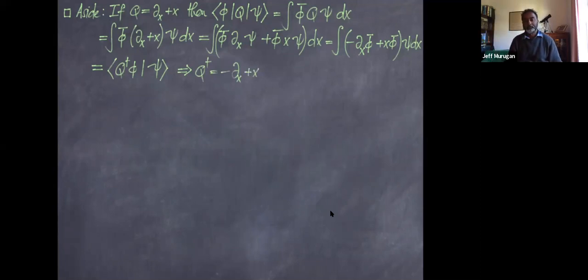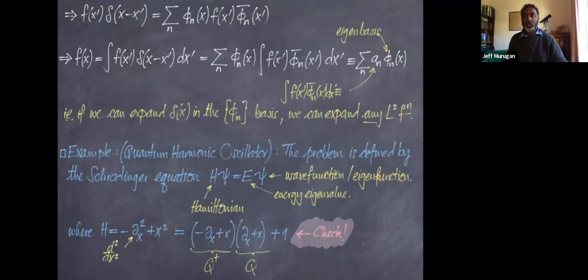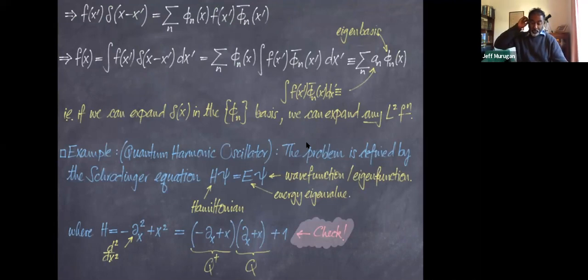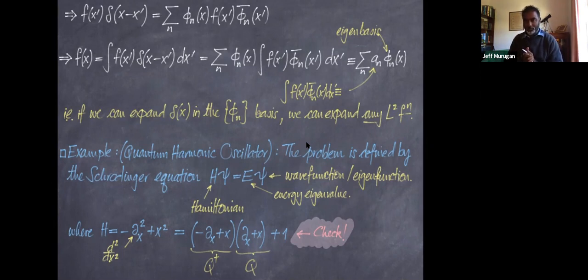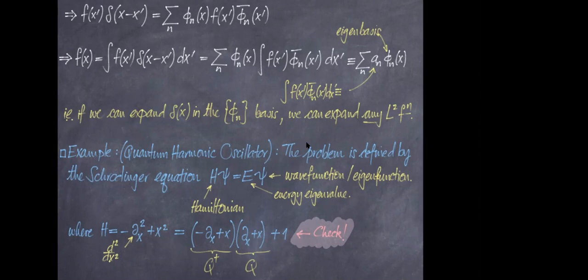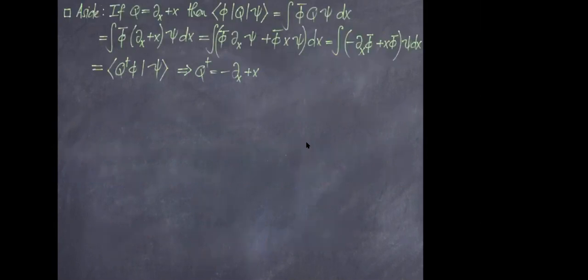A student asks where the plus one comes from in the factorization. The answer is precisely because we're working with operators and not numbers — when you act on a test function f(x) with both sides, the plus one arises from the product rule. Let's return from the aside to the main computation.